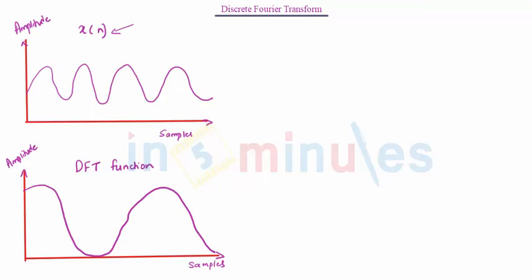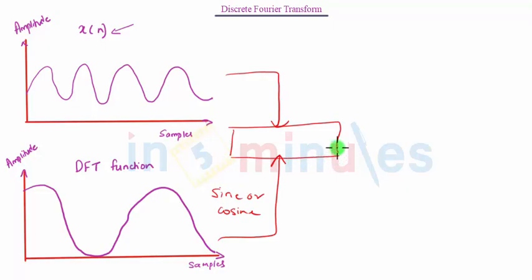This is a general signal given by x and this is a DFT function. It can be a sine wave or a cosine wave. Basically the DFT function compares these two signals. And there is a block called correlation. Correlation is a measure of similarity between these two signals. This will basically generate a value that is a complex number.